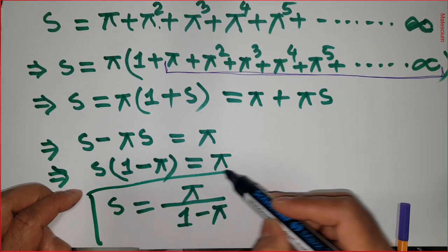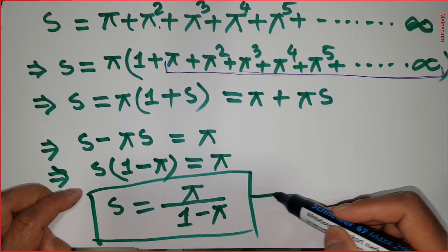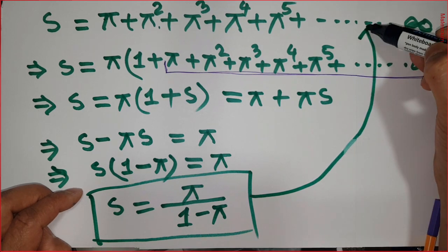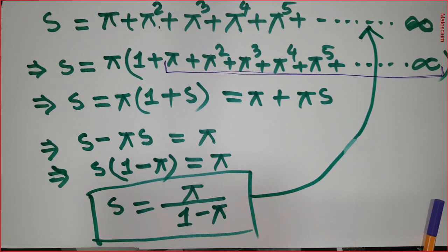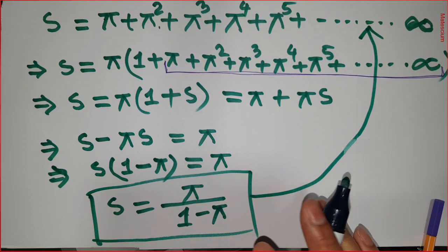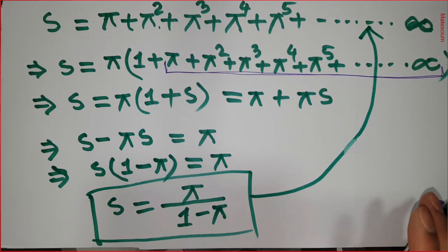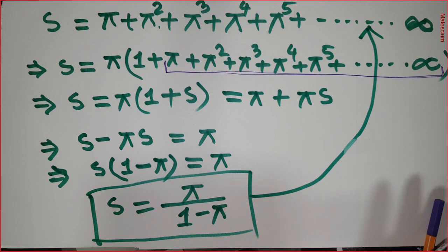That means S equals this π divided by it - go down - that means 1 minus π. Yes, this is the answer of this infinite series of π. Isn't it simple? Mathematics is not so complex, it's pretty much interesting.